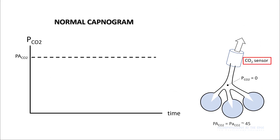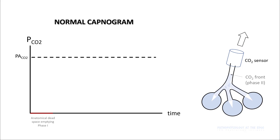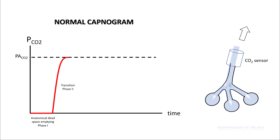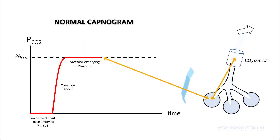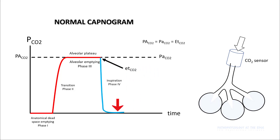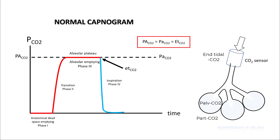To measure a capnogram, you need a carbon dioxide sensor. When you exhale, the first air that comes out is from your anatomical dead space, which does not have carbon dioxide — so you have a flat line at CO2 of zero. Next, the CO2 from your alveoli starts coming out and your CO2 sensor can pick it up, giving you a sudden transition — that's phase 2. As you continue to exhale, the CO2 level plateaus, which is equal to your alveolar CO2. Once you start inhaling, you go back to zero, as inhaled air has no carbon dioxide. In a normal capnogram, your alveolar CO2 will equal PaCO2, and this will equal your end-tidal CO2.